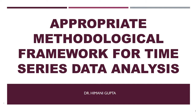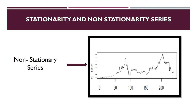Whenever we talk about time series analysis, our data will be either stationary or non-stationary. When you plot your variables, there can be a seasonal trend, a cyclical trend, or an irregular trend, commonly known as a stochastic trend. This irregular kind of trend means the data is non-stationary, and we have to convert it into stationary data before working on it.